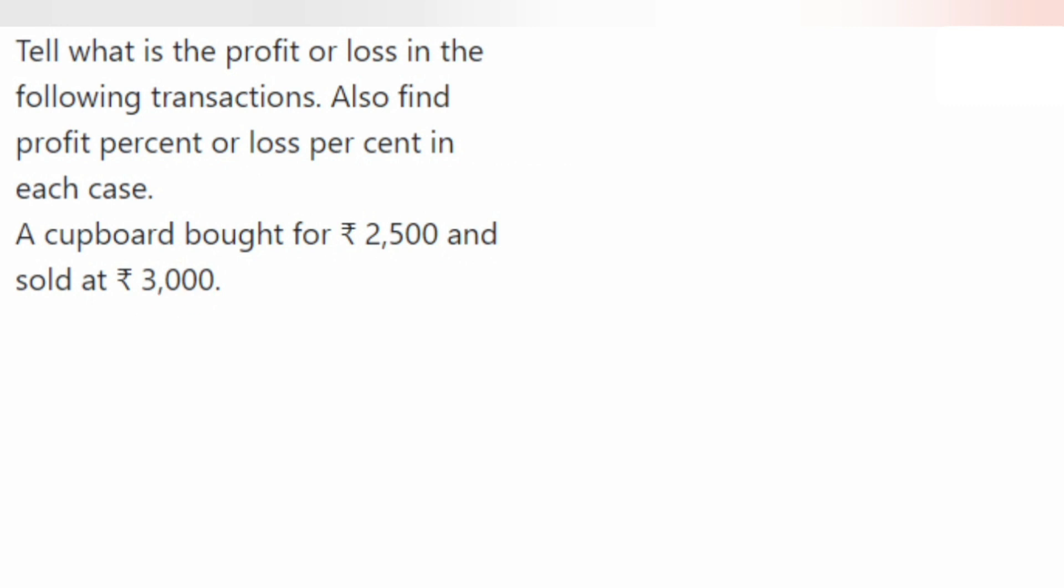Let's write down the cost price and selling price. The cost price of cupboard is rupees 2,500 whereas selling price of the cupboard is rupees 3,000. We can know that selling price is more than cost price.